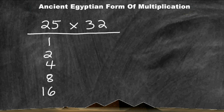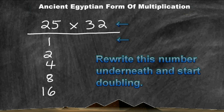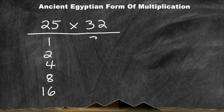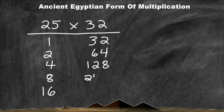At the top of our second column, we have the number 32. Whatever number you have at the top of your second column, you must rewrite that number and start doubling it. Because we only doubled 5 numbers in our first column, you may only double 5 numbers in the second column. So we rewrite 32, double it to 64, double 64 to 128, double 128 to 256, and double 256 to 512.